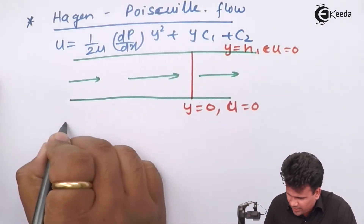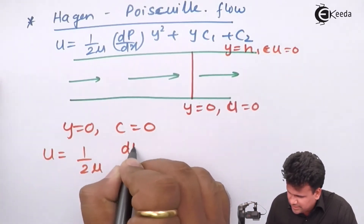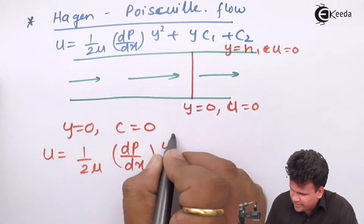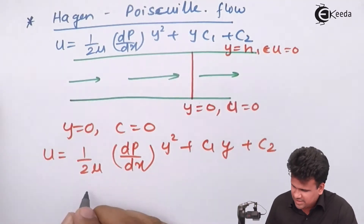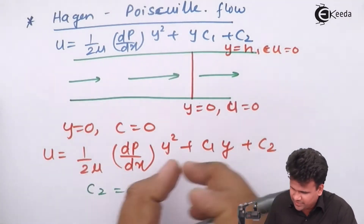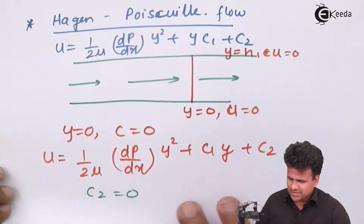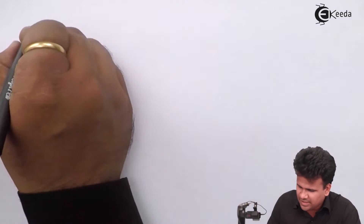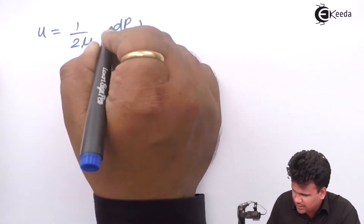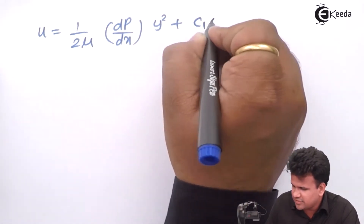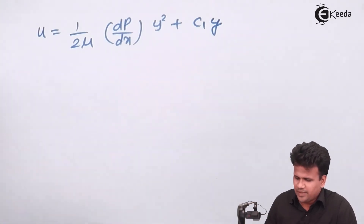For the first boundary condition, y is equal to 0, which gives c2 equal to 0. The equation is u equal to 1 upon 2μ · dp/dx · y² + c1·y + c2. Substituting this gives us c2 equal to 0, since the terms with y and u will both be 0. So our equation is now reduced to u equal to 1 upon 2μ · dp/dx · y² + c1·y.